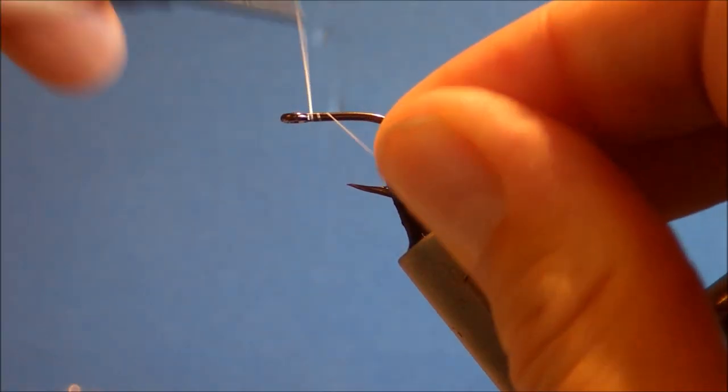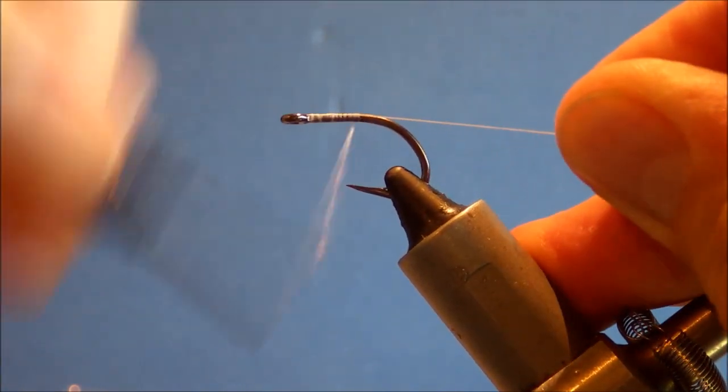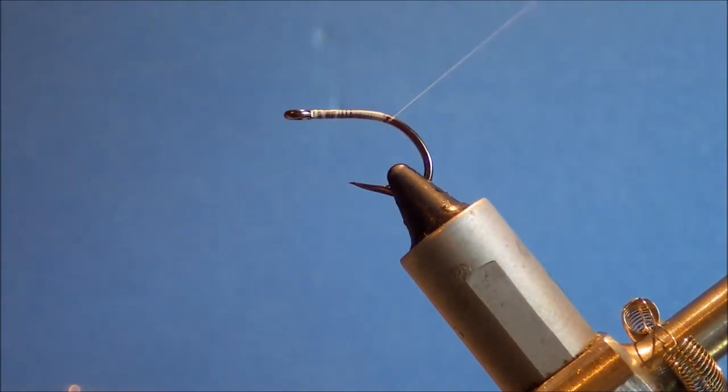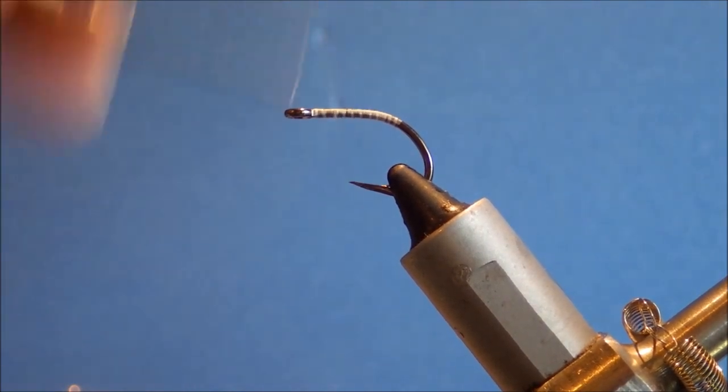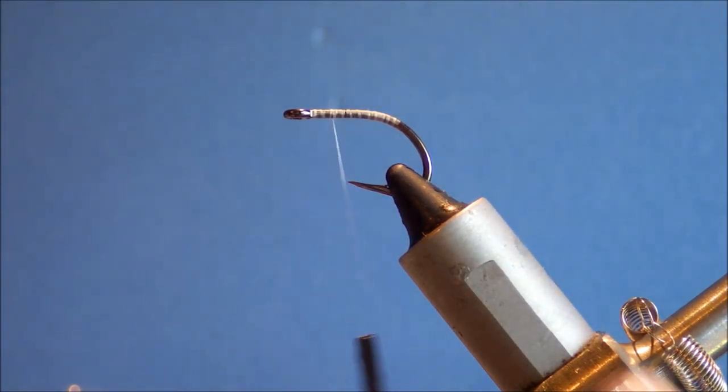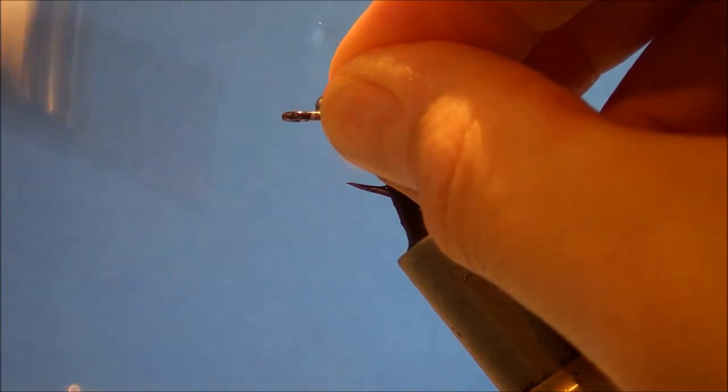So, I've got a size 4 owner fly liner on the vise, you can tie them 2's, 6's if you like. Just change the size to suit your own preference. I'll just run down a bit of thread and go slightly round the bend. Then I'm going to come back to about an eye width away from behind the eye.